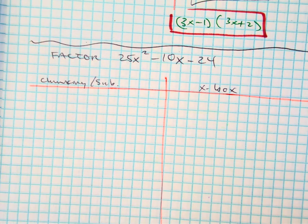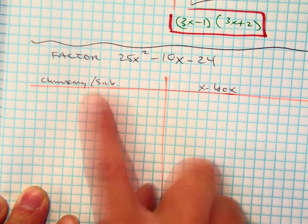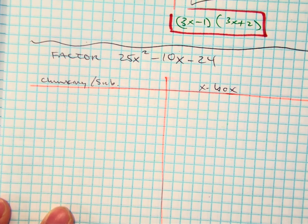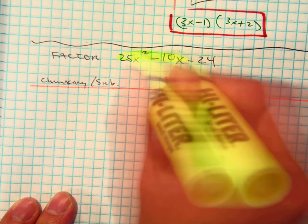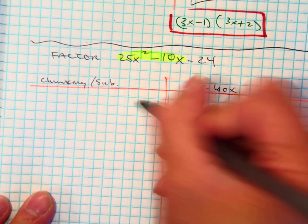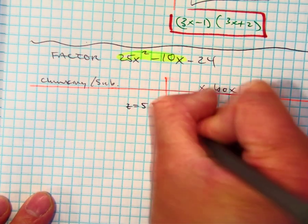All right, in this problem, I asked you to factor, so I'm going to show you guys that chunking method. I'm just basically going to be looking at the first two to see if they have a GCF. You guys told me the GCF is what? 5x.